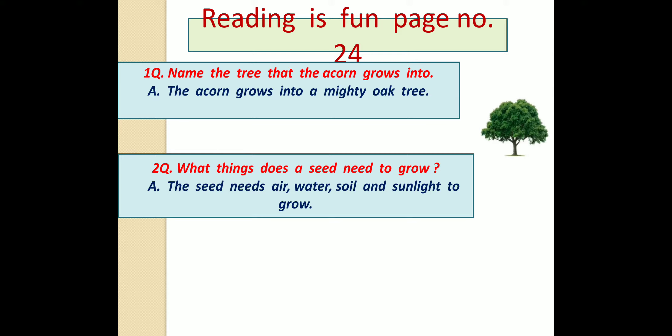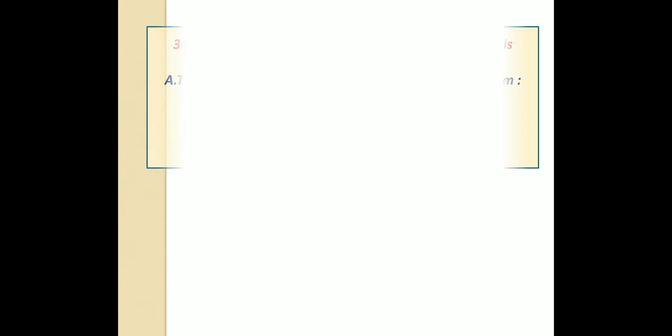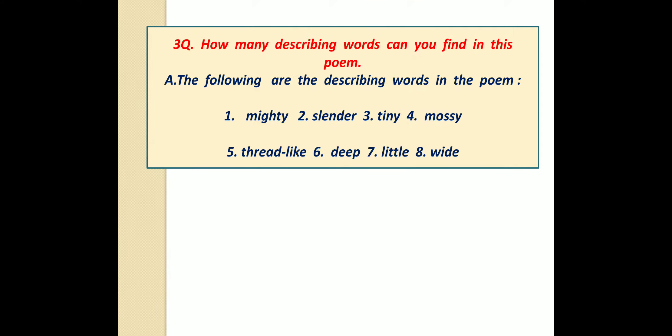Now coming to question. Name the tree that the acorn grows into. The acorn grows into a mighty oak tree. Next, What things does a seed need to grow? The seed needs air, water, soil and sunlight to grow. How many describing words can you find in this poem? So the following are the describing words in the poem: Mighty Slender Tiny Mossy Thread-like Deep Little White.